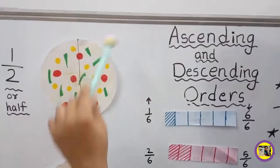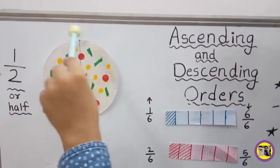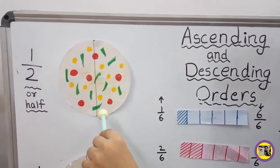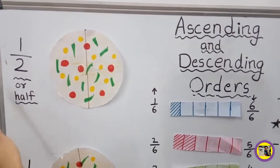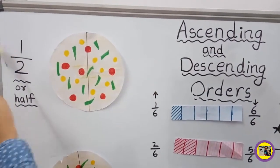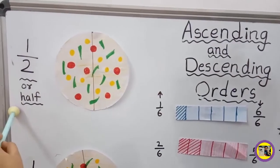This is a pizza. It is divided into half. It is called 1 upon 2, or half.